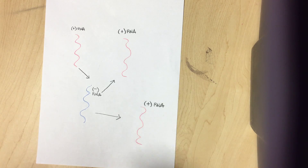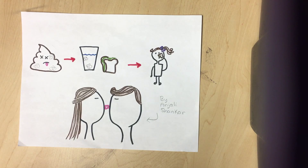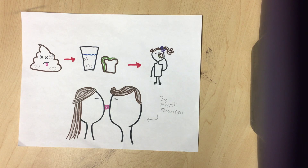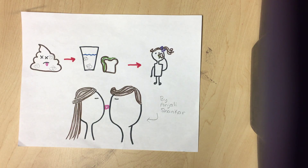Poliomyelitis is spread through person-to-person contact when fecal matter containing the virus reaches the oral cavity by hand, or more rarely when food or water contaminated with fecal matter enters through the oral cavity. Exchanging saliva can also spread the virus. Carriers of polio are most infectious seven to nine days before the onset of symptoms.